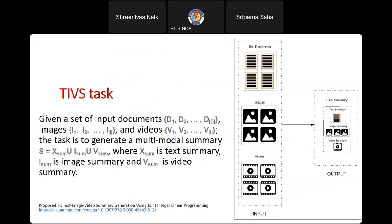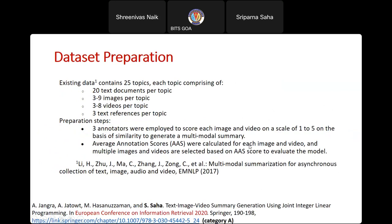Our TIVS task takes as input a set of text documents, a set of images, and a set of videos, combining all of them to generate a text summary, an image summary, and a video summary. In the input we have text documents, images, and videos; in the output we have a text summary, an image summary, and a video summary.